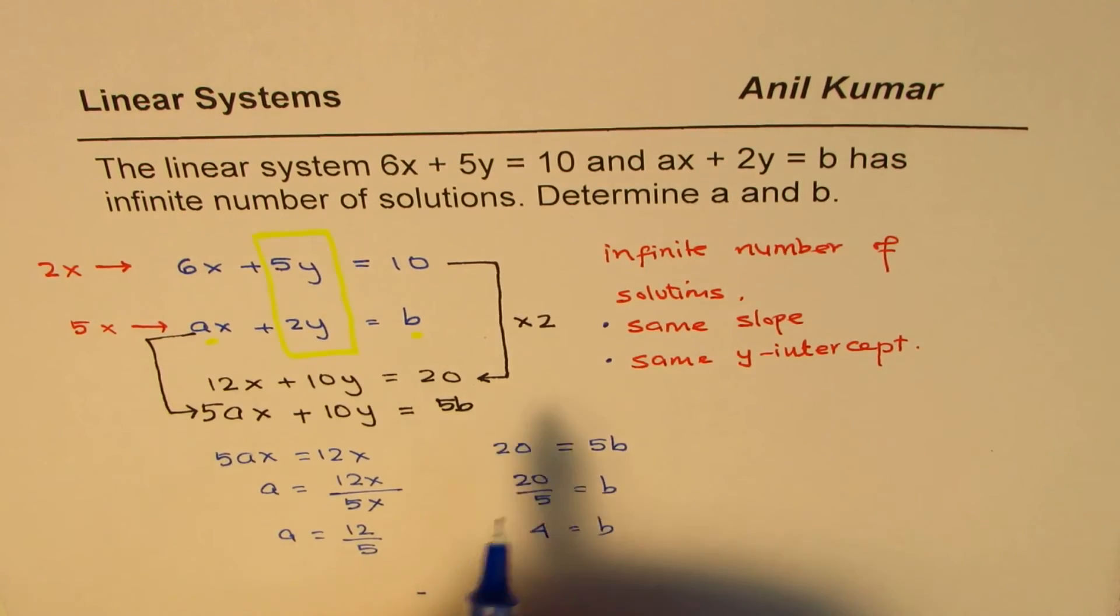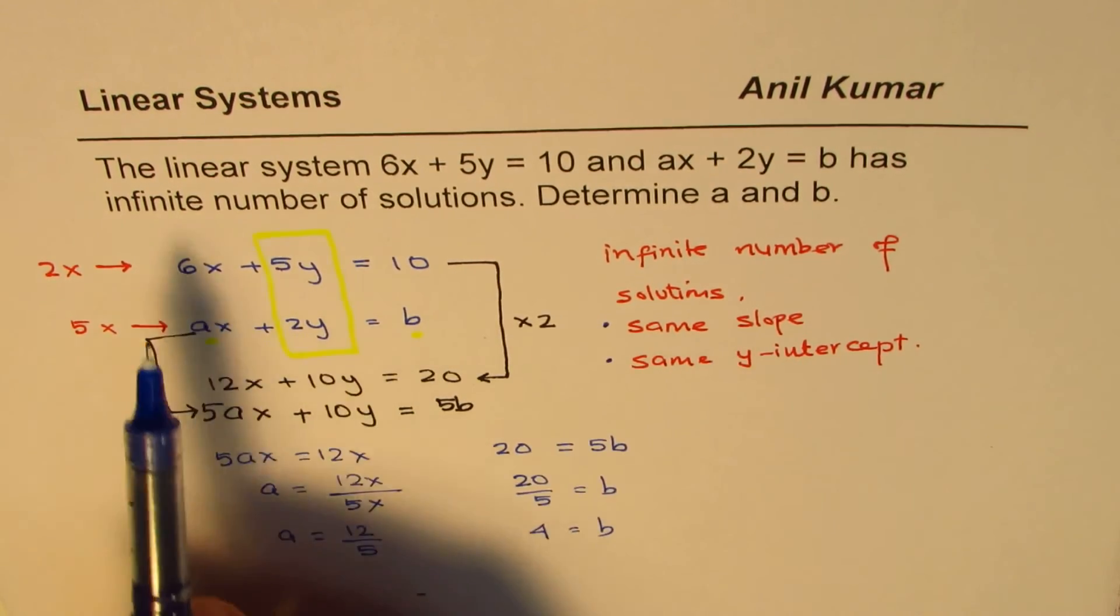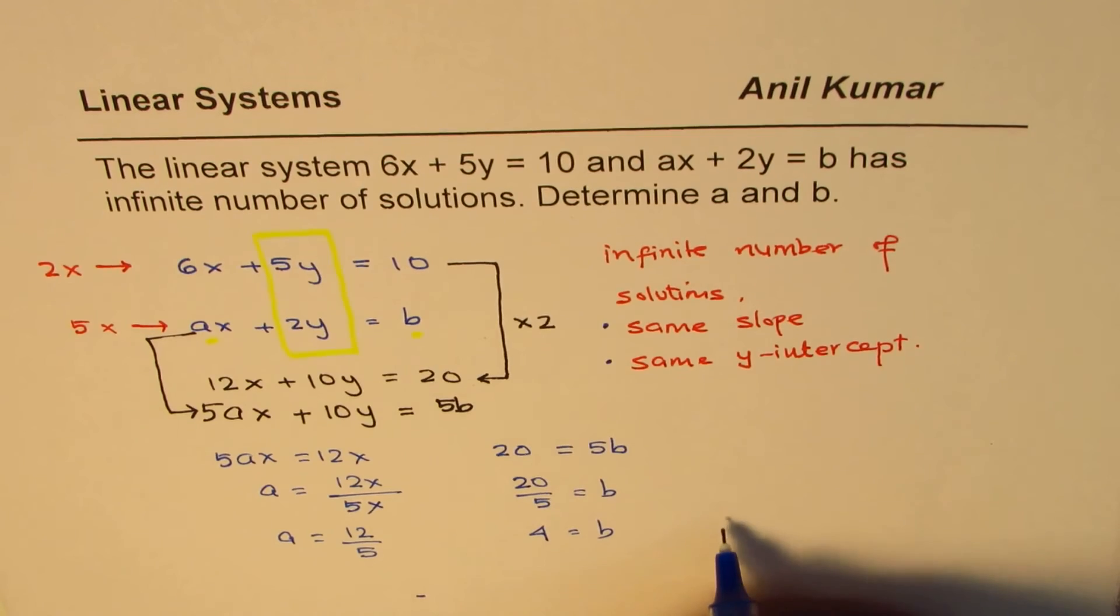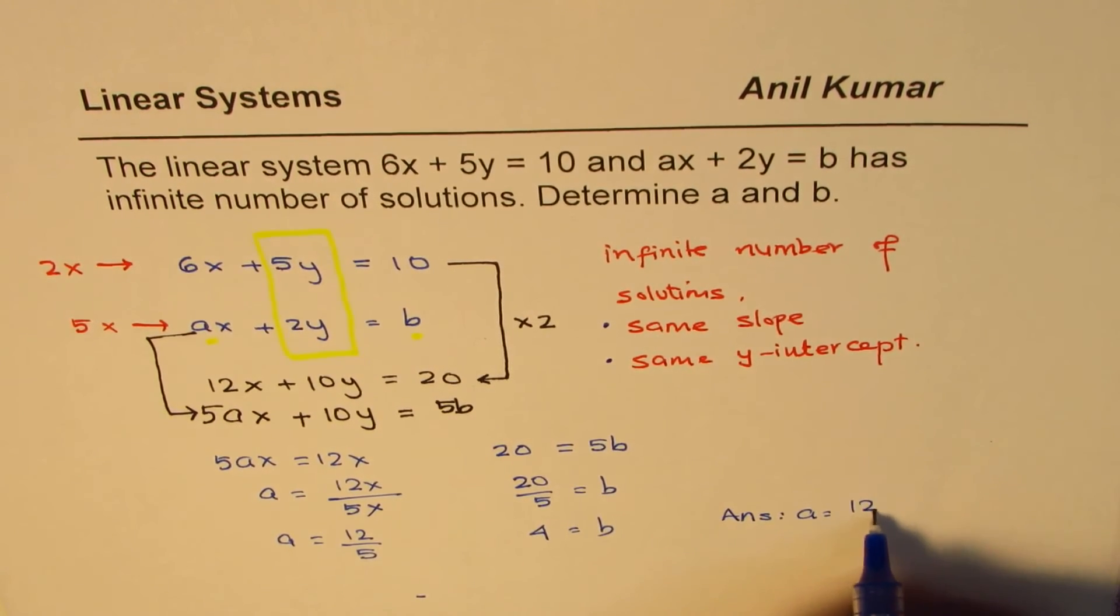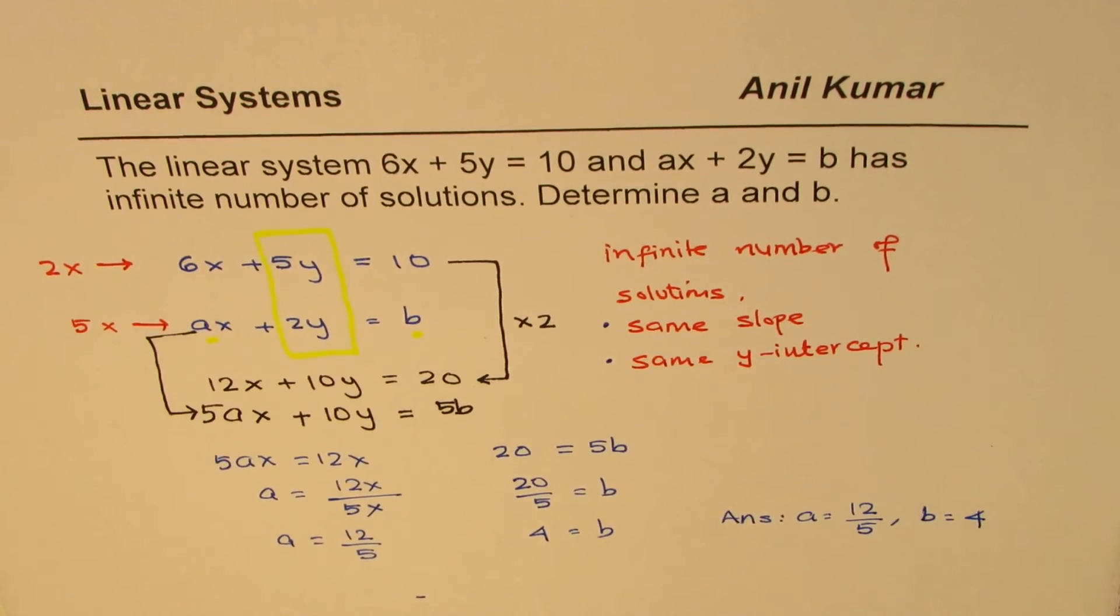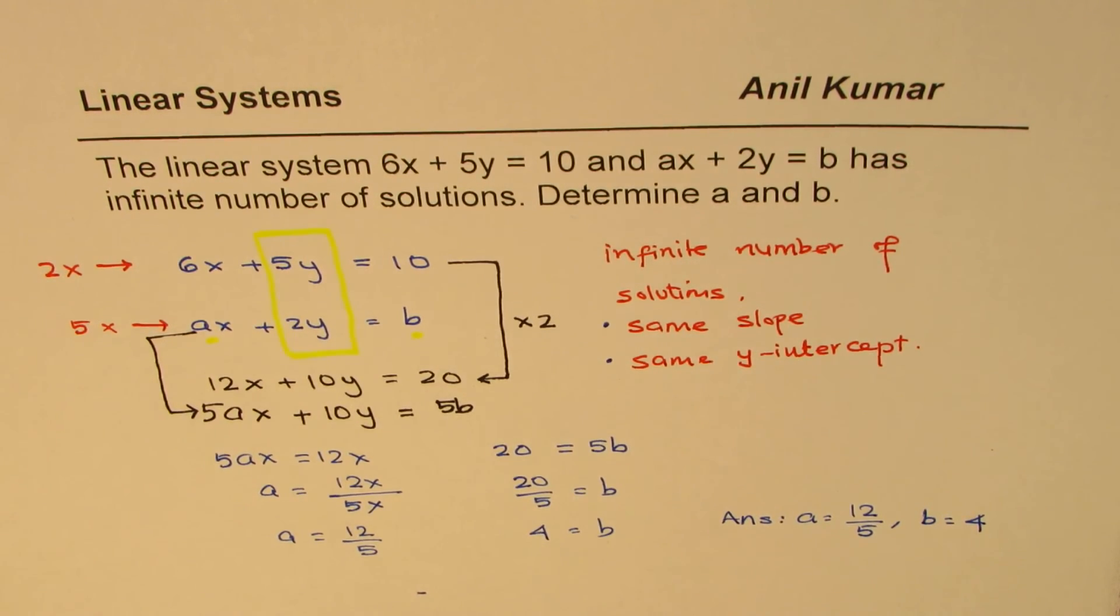So now we get our answer that if this system has to form infinite number of solutions, in that case, a equals 12 over 5 and b equals 4. So that is how you could actually solve it.